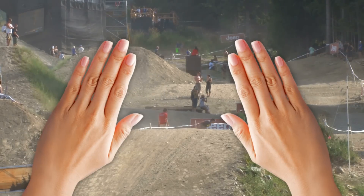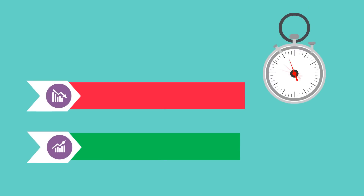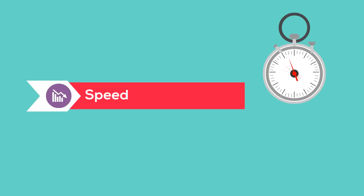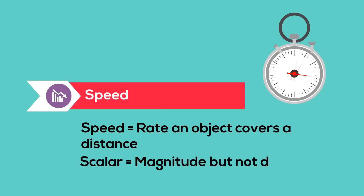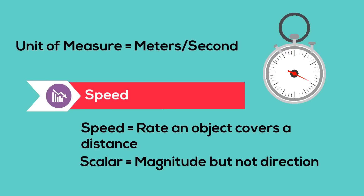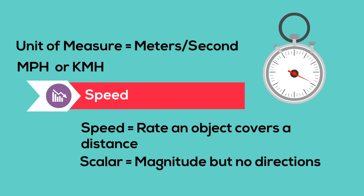Two ways you can measure motion or movement is speed and velocity. Speed is the rate at which an object covers a distance. It is considered a scalar measurement, which means it measures magnitude but not direction. The unit of measure for speed is meters per second.